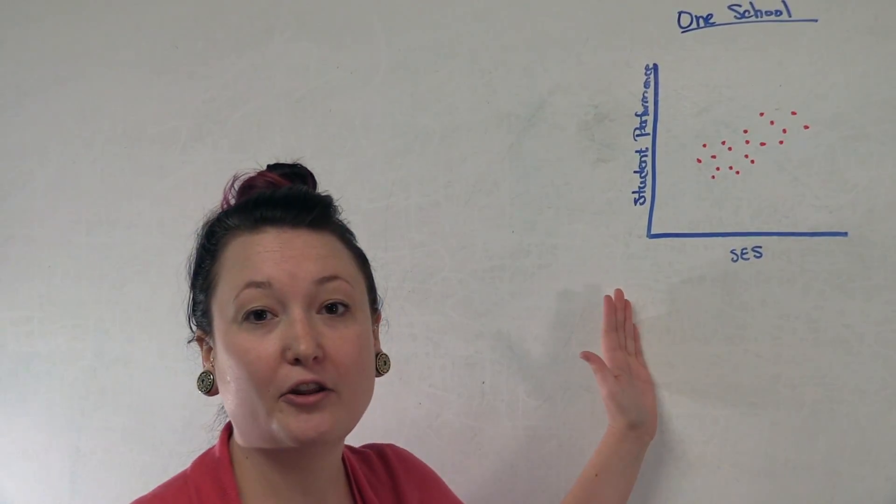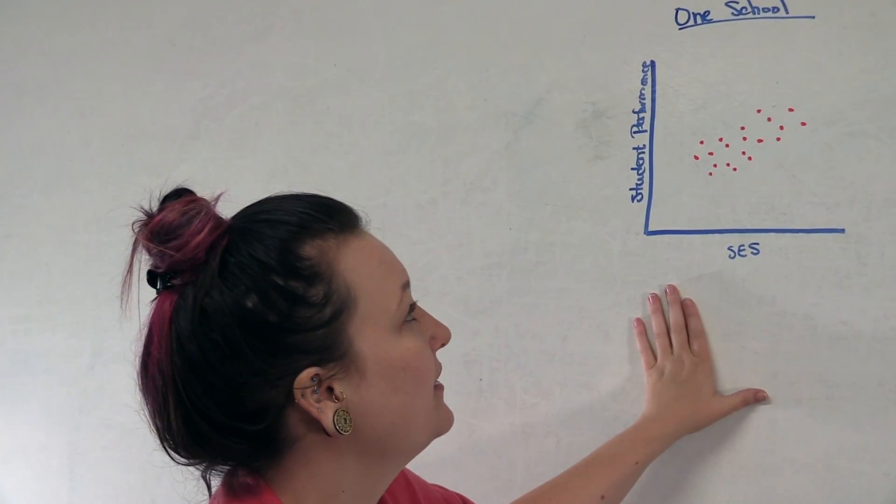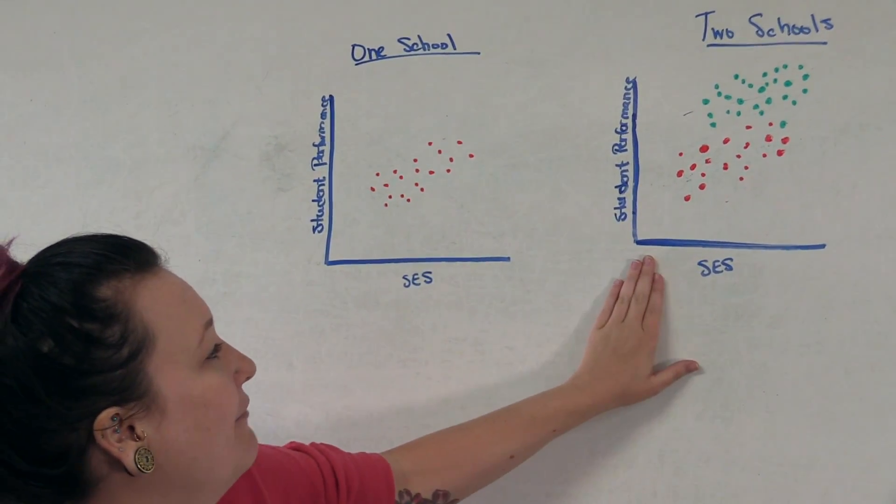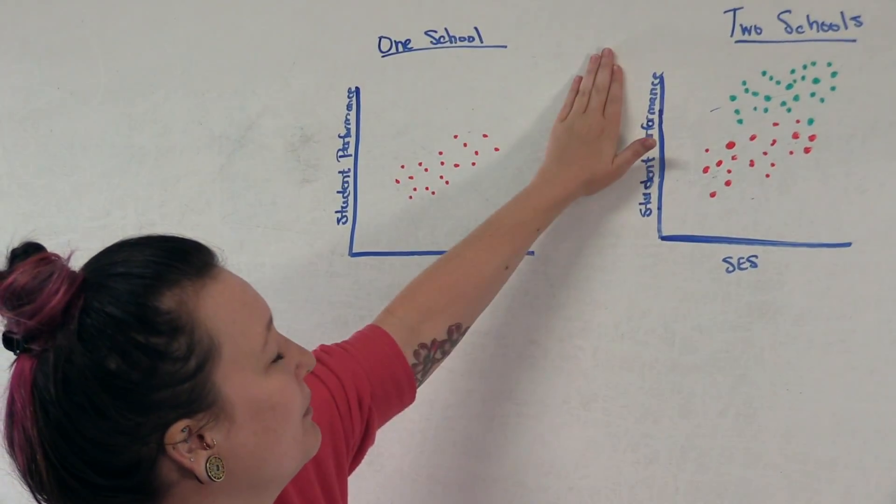However, what if we had another school? We could look at the same relationship comparing two schools. In this case, we have SES again by student performance.